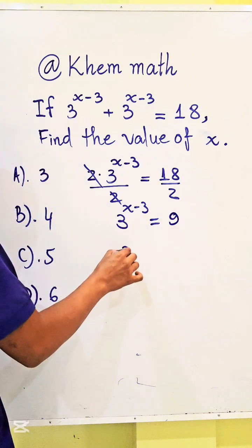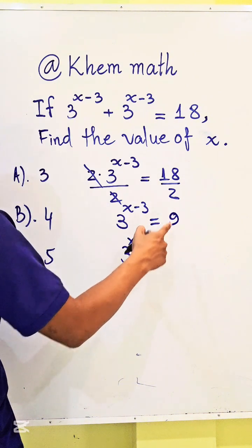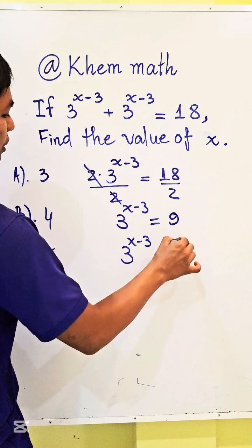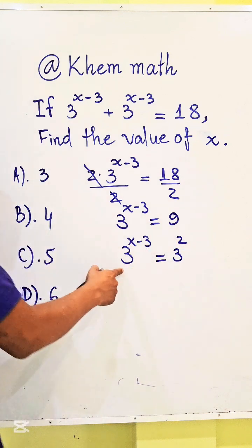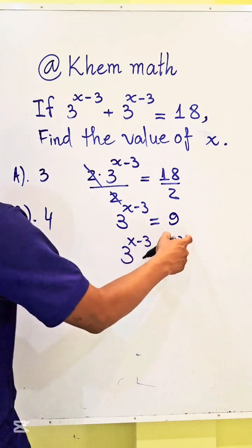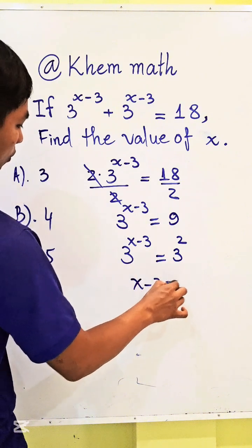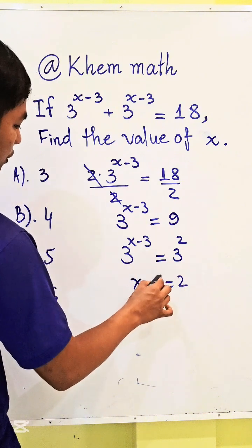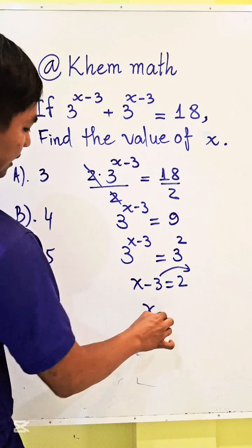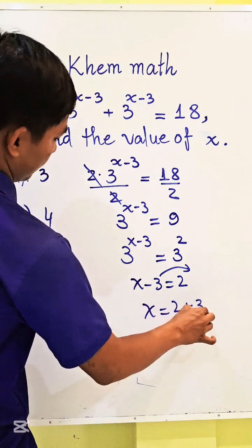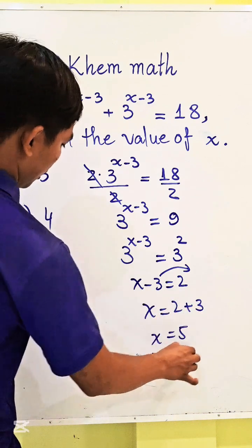Now 3 power x minus 3 equals 9. Since 9 can be written as 3 squared, and the bases are the same, we set the exponents equal: x minus 3 equals 2. We move 3 to the right-hand side and get x equals 2 plus 3, so x equals 5.